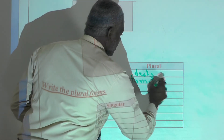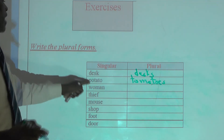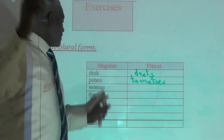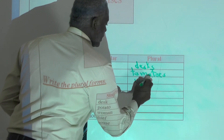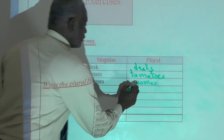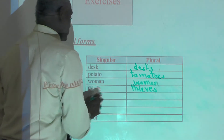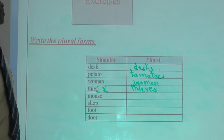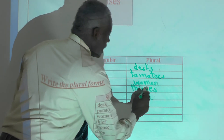For tomato, we add es instead of s because the word ends in o. Woman — this is an irregular noun, and the plural is women. Very good. Thief — we change the f into v and we add es: thieves. Mouse — the plural is also irregular: mice.